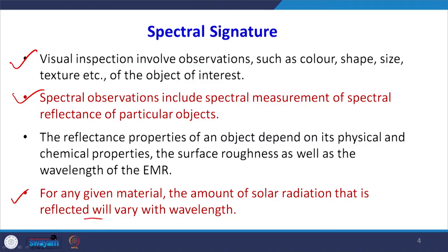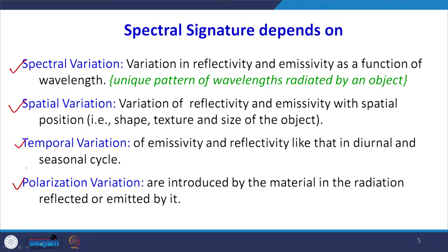For any material, any given object or target, the amount of reflected radiation will vary with the wavelength — it is very much dependent upon the wavelength region in which the sensor captures the data. The spectral signature of different objects on the ground will depend upon four parameters: spectral variation, spatial variation, temporal variation, and polarization variation.